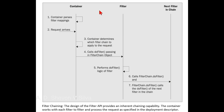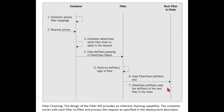Here you can see the chain container, filter, and next filter in the chain. Step one: the container passes the filter mapping. Step two: the request arrives. Step three: the container determines which filter chain to apply to the request. Step four: calls doFilter, passing the filter chain object. Step five: perform doFilter logic of the filter. Step six: call the filterChain.doFilter, and filterChain.doFilter calls the doFilter of the next filter in the chain.